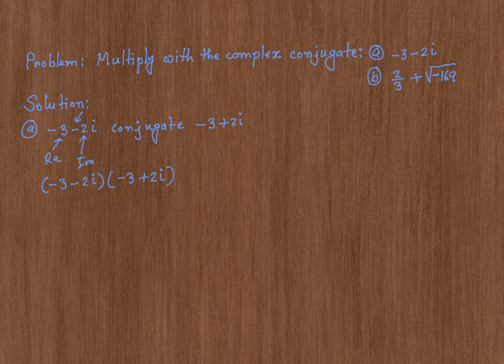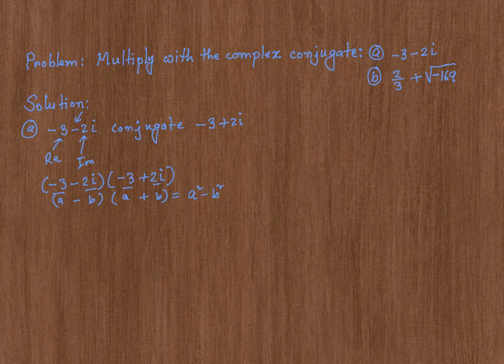This is easy to multiply. Think of negative 3 as your a and 2i as your b. So it's going to be a minus b times a plus b, which is the difference of squares, meaning a squared minus b squared. Or if you don't want to use this, you can just FOIL it as usual.